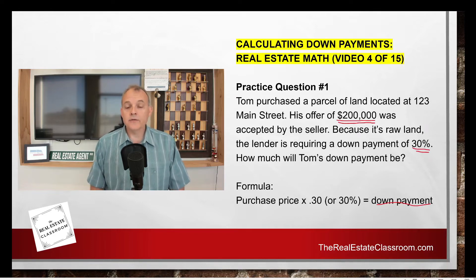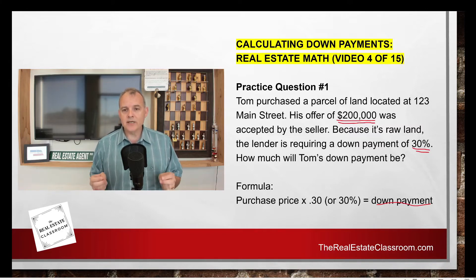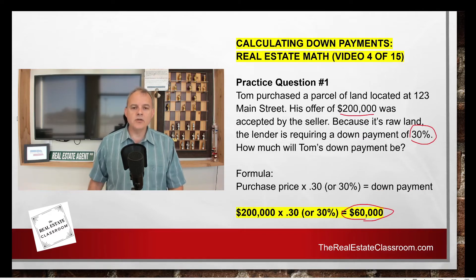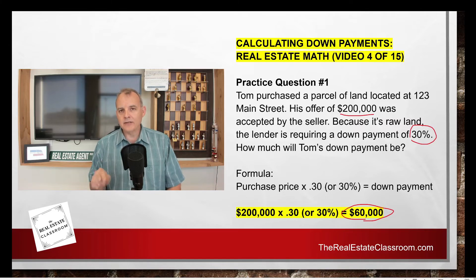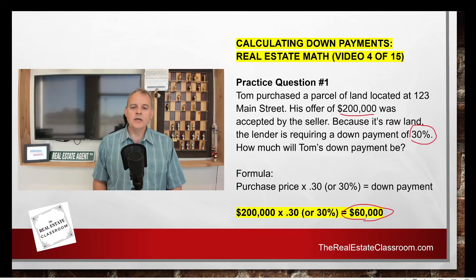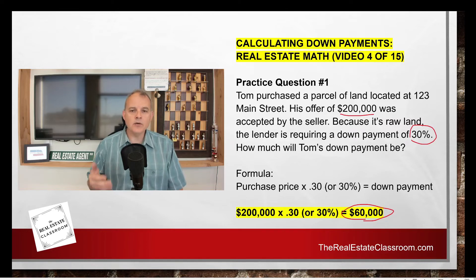The formula here is: purchase price times the down payment percentage equals the down payment. So we take $200,000 — the purchase price accepted by the seller — and multiply it by the required 30% down. There are two ways to do it: take 200,000 and multiply by 0.30, or multiply by 30 and hit the percent key on your calculator. Either way, you get a down payment of $60,000. So the answer to practice question number one is $60,000.